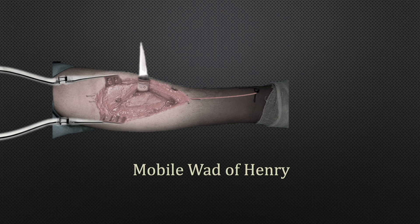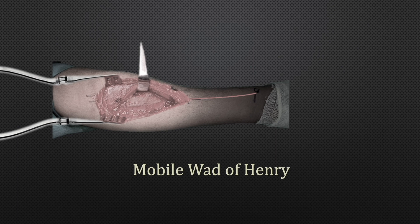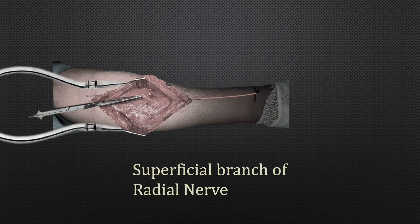Retract the brachioradialis laterally. Once done, you will see the deep fascia separating the deep muscles of the forearm from the mobile wad of Henry. The vena comitantes — that small purple-red vein — is marking the track of the radial artery. Be careful in this area; neurovascular structures are often surrounded by fibro-fatty tissue, so there are chances of a major vascular or neural structure here.